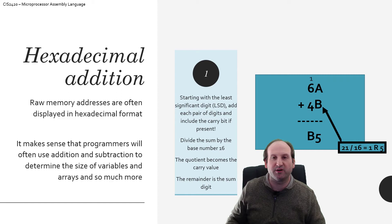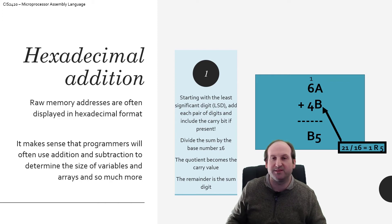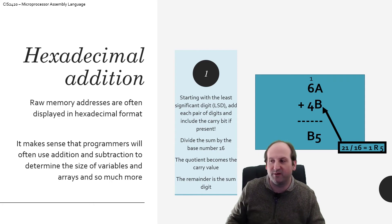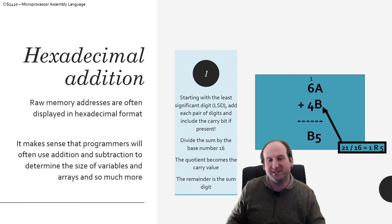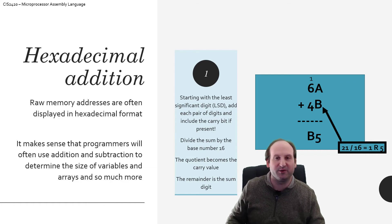One final example using the A, B, C, D, E, and F components: 6A plus 4B. A plus B is 10 plus 11, which is 21. 21 reduced into hexadecimal is 1, 5 — so the 5 goes down below and the 1 carries over. Then 1 plus 6 plus 4 gets me 11, which is B. One thing to note: the largest numbers you could add would be F plus F, and you'll always carry over just a 1 — F plus F is 1E, since 15 plus 15 is 30, which reduces to 1E.